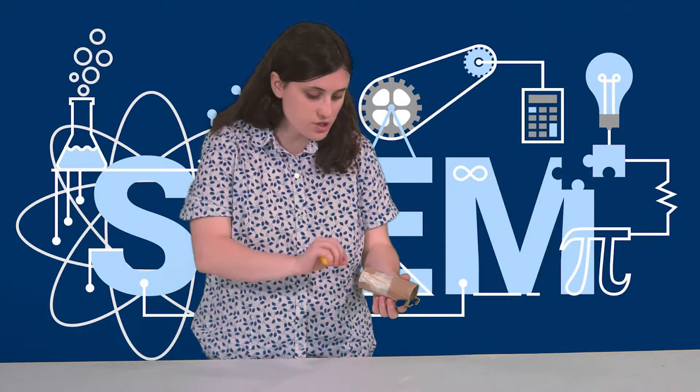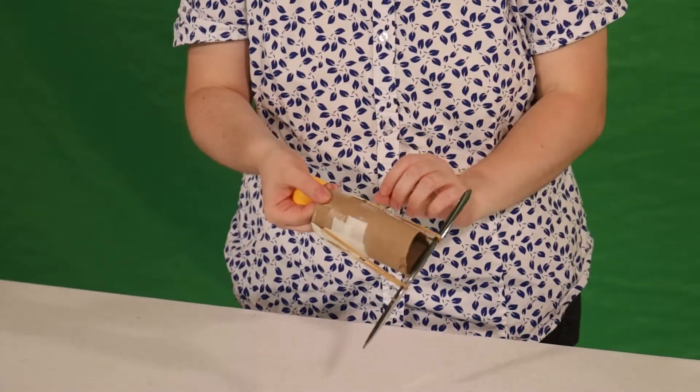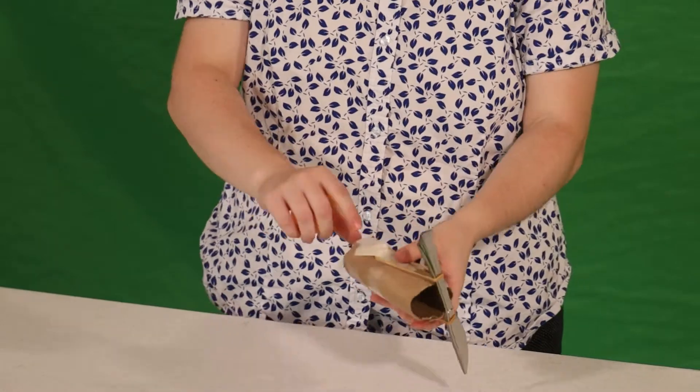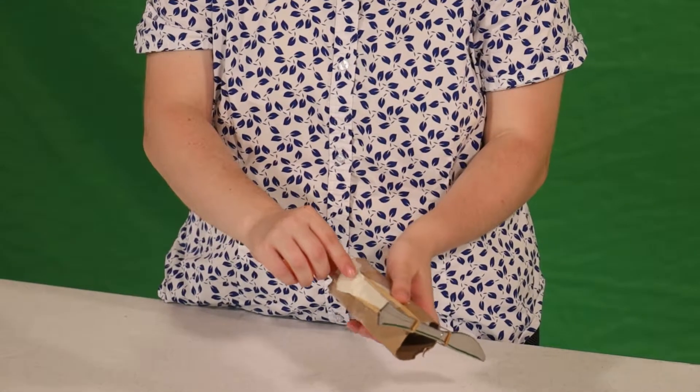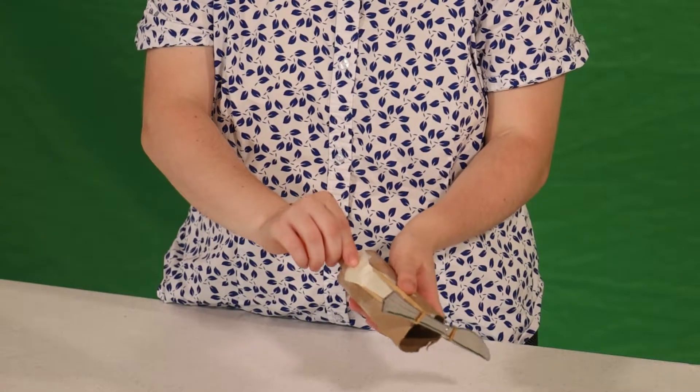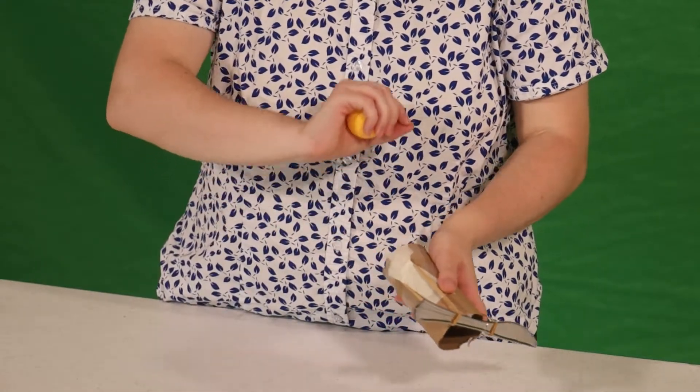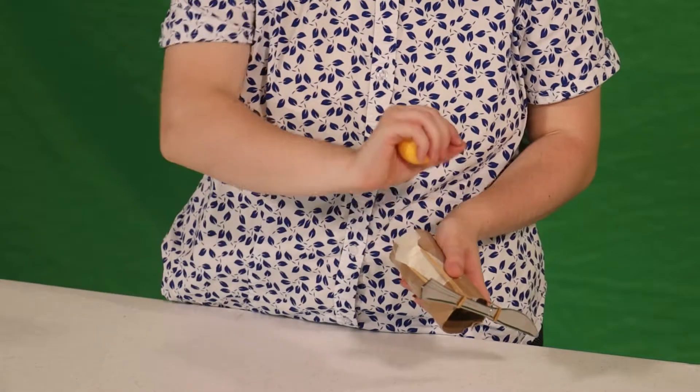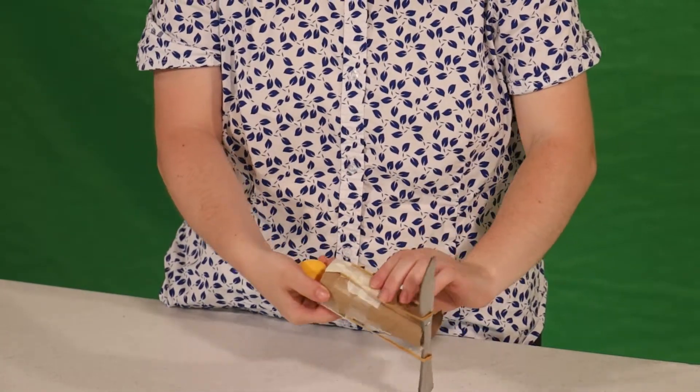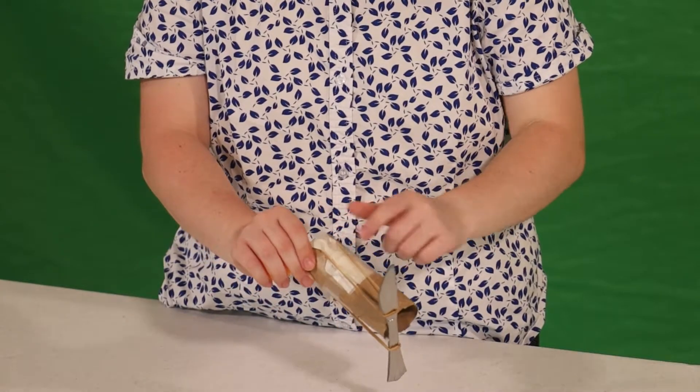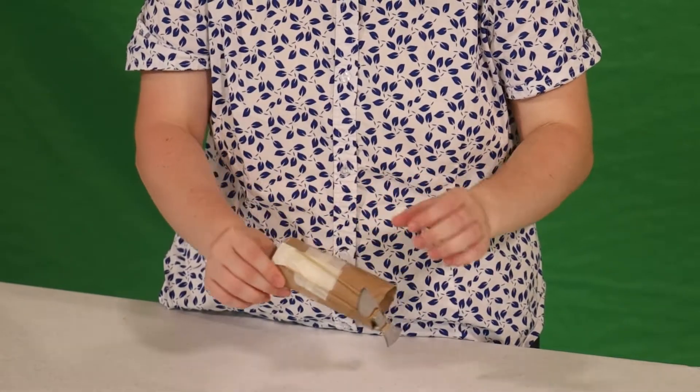So the first thing you're going to do is take your toilet paper roll, you can decorate it if you want. You are going to tape the rubber bands on each side very close to one end, and you're going to want to be able to pull it through the whole side of the toilet paper roll. You're going to do this to the other side and I double taped it to make sure when I was pulling it, it stayed nice and secure.